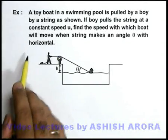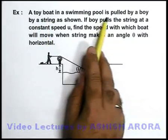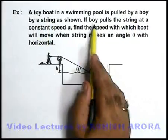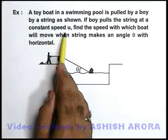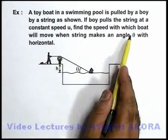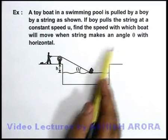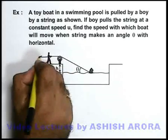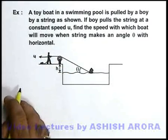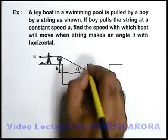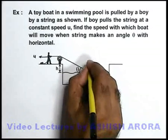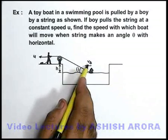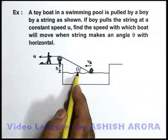In this example, we are given that a toy boat in a swimming pool is pulled by a boy by a string as shown. If the boy pulls the string at a constant speed u, find the speed with which the boat will move when the string makes an angle theta with the horizontal. The boy is pulling the rope with speed u, and the boat will be moving toward the left with a velocity v_b.